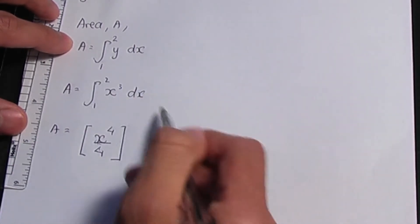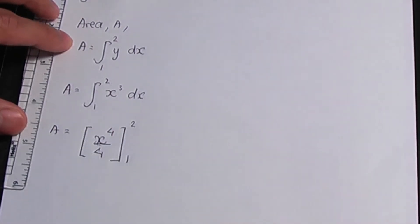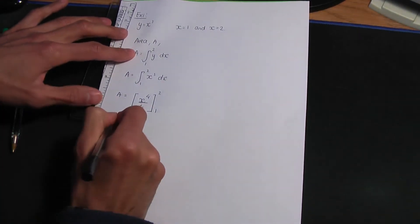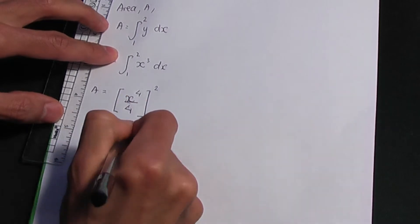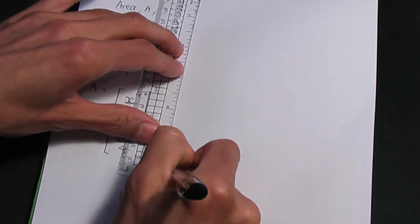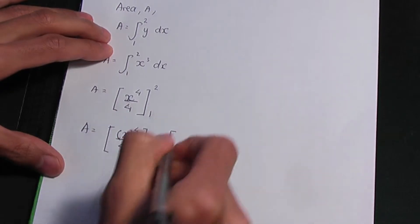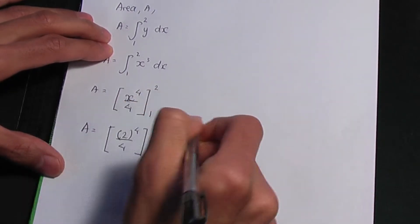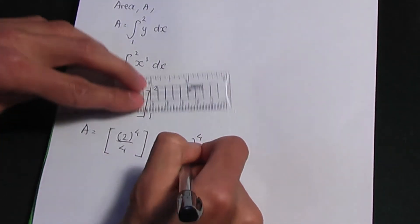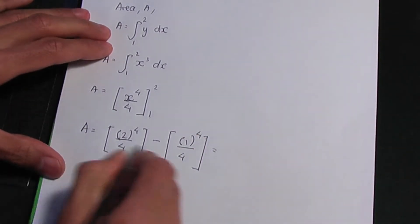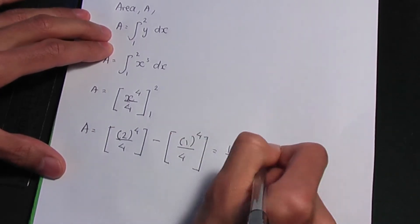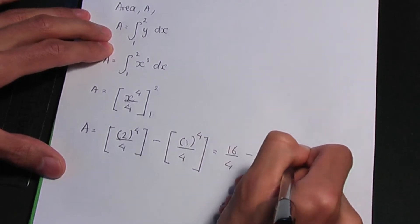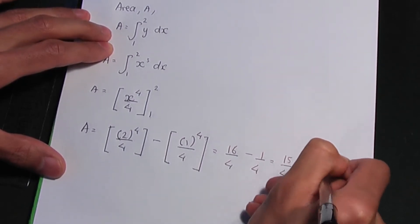And remember, the limits go on the right-hand side, above and below the square bracket. Now from this point forward, let me replace the limits. The upper limit needs to be replaced first — upper limit being 2. So we're going to have 2 to the power of 4 divided by 4, minus — and then we replace the lower limit being 1 — so we'll have 1 to the power of 4 divided by 4. When you calculate the solution, 2 to the 4 is 16 over 4, minus 1 to the 4 is 1 over 4. The answer is 15 over 4 units squared.